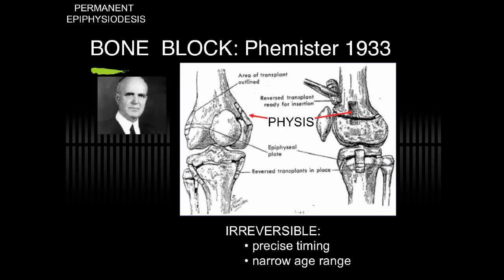Dr. Femister in 1923 introduced the concept of the bone block shown here to produce epiphysiodesis for limb length or angular correction. The drawbacks are that this requires precise timing and therefore has a narrow age range, usually during adolescence.